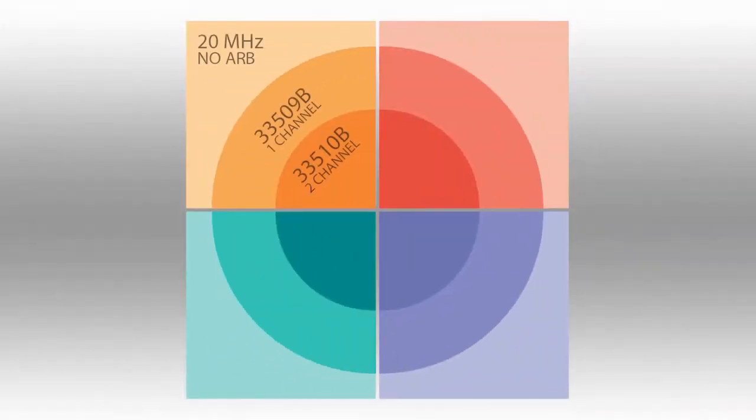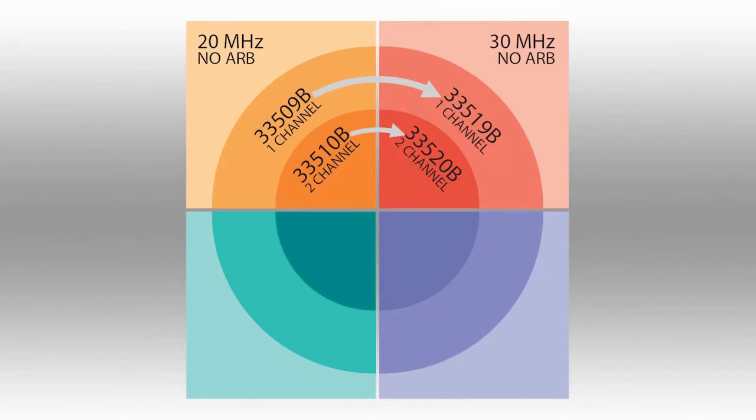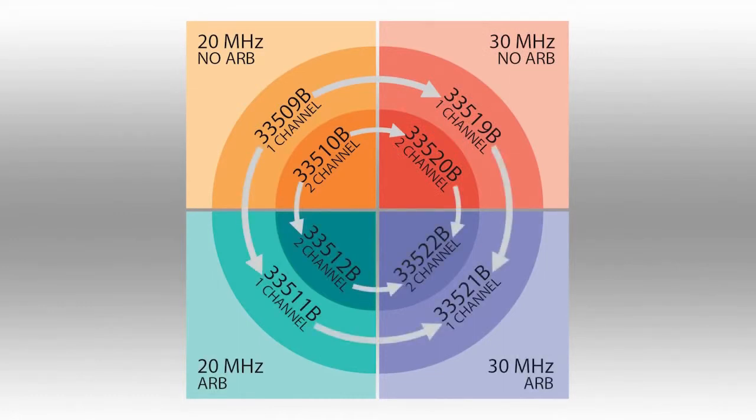For example, begin with a 20 MHz one or two channel model now, then upgrade later to 30 MHz bandwidth, add arbitrary waveform capability, or add both.